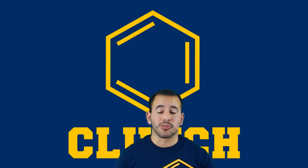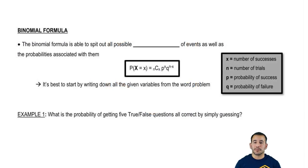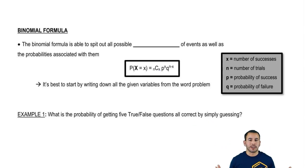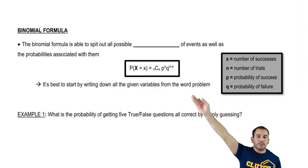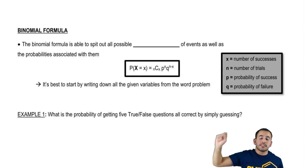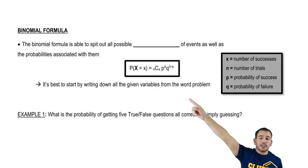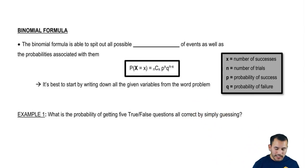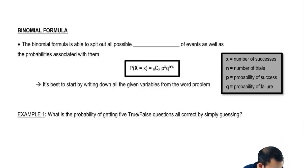So now let's go ahead and jump into the actual binomial formula, which is given by this crazy equation. So P of x equals — where x is the number of successes — equals the number of successes that we want. We have the combination function, and also the probability of success to the power of the number of successes, times the probability of failure to the power of the number of trials minus successes, which is technically our failures.